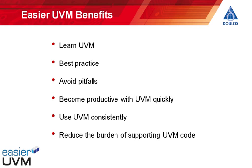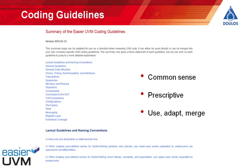Let's take a look at the coding guidelines. The Easier UVM coding guidelines are quite extensive but mostly common sense. They're presented in two different forms on the website. First, there's a summary of the coding guidelines that you can copy and paste for your own purposes — you can incorporate it into your own company-specific coding guidelines. The guidelines aren't rocket science and there are no big surprises, but they are a lot more prescriptive than the standard UVM documentation.